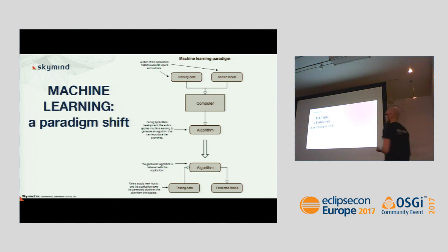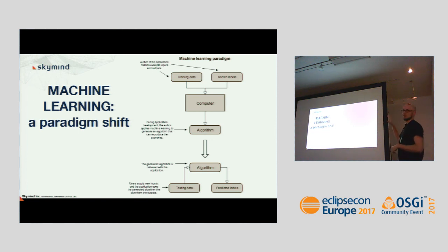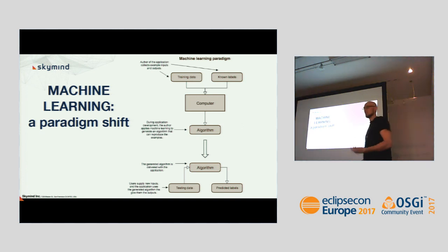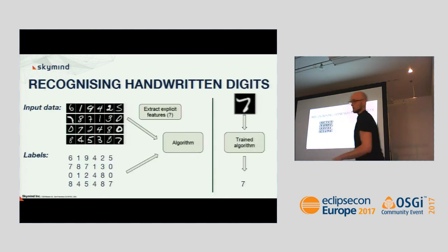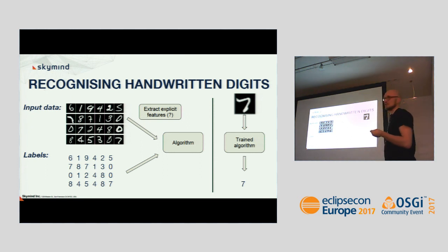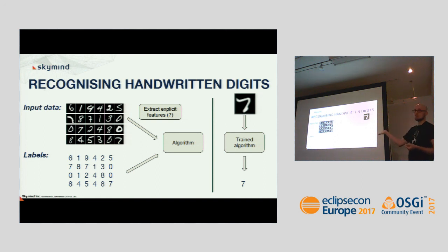Usually we do this in a two-step approach. First, we feed the algorithm training data and labels, and we test the algorithm on test data that wasn't seen before to validate the results. A well-known example is classifying handwritten digits. You get images of handwritten digits — this is the MNIST dataset — and you get labels which correspond to those digits.